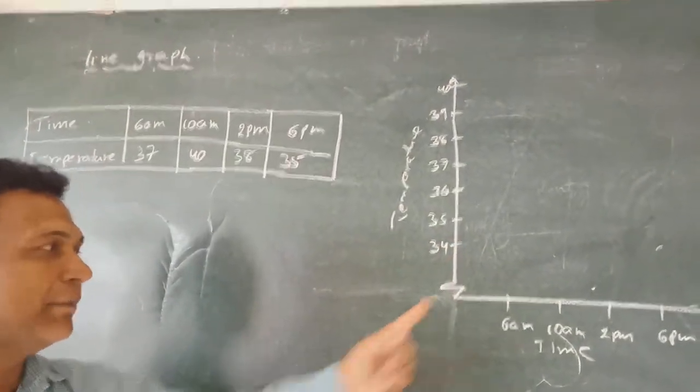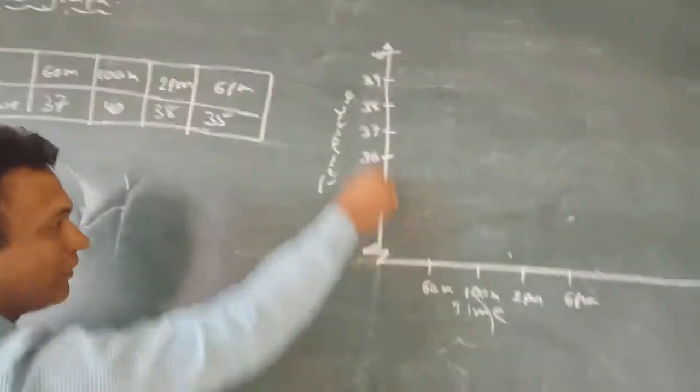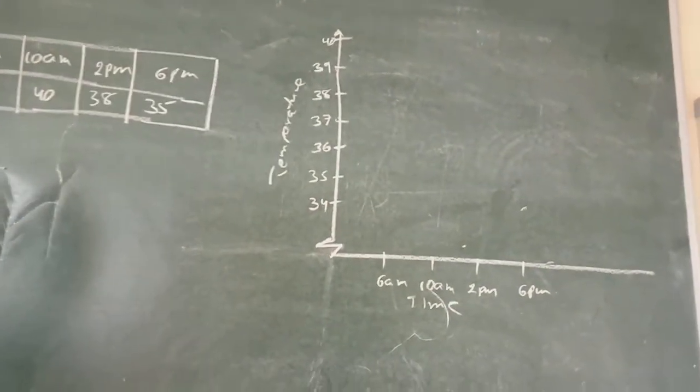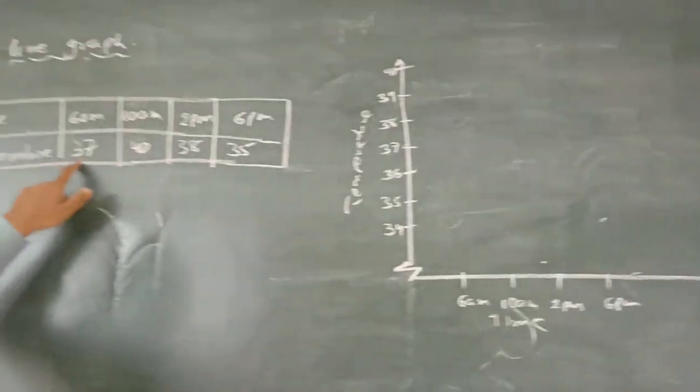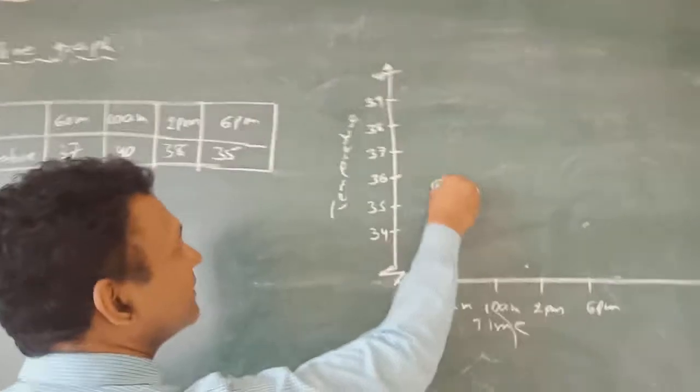Here we will keep the zigzag, zigzag means like this. The y-axis will keep on changing. Now at 6 AM, the temperature is 37 degrees.